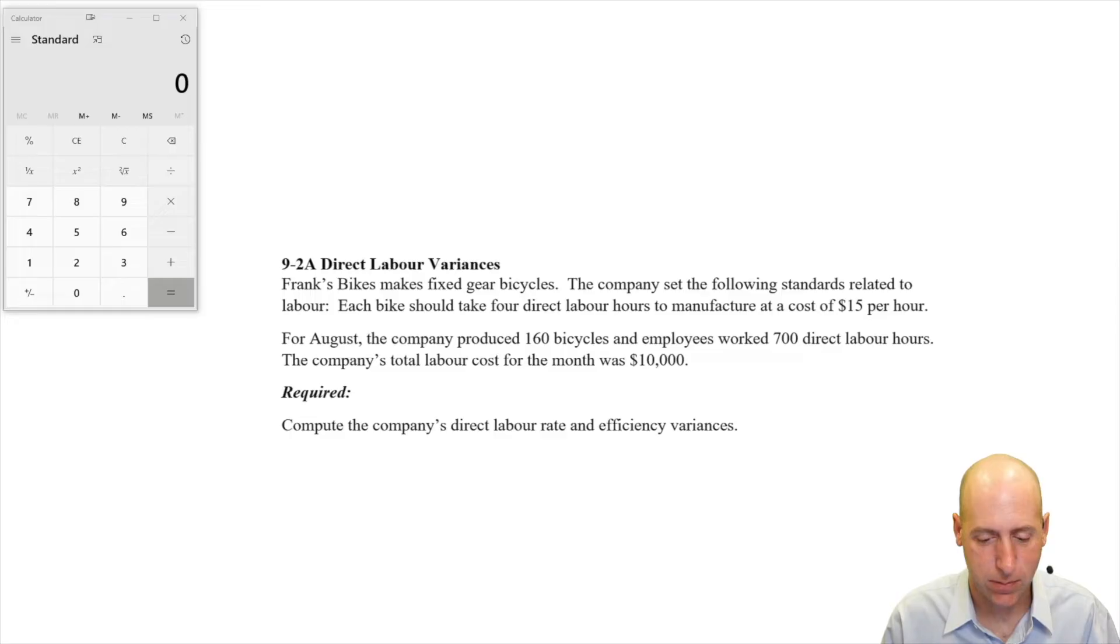Frank's Bikes makes fixed gear bicycles. The company set the following standards related to labor. Each bike should take four direct labor hours to manufacture at a cost of $15 per hour. So four times 15, each bike takes $60 of labor.